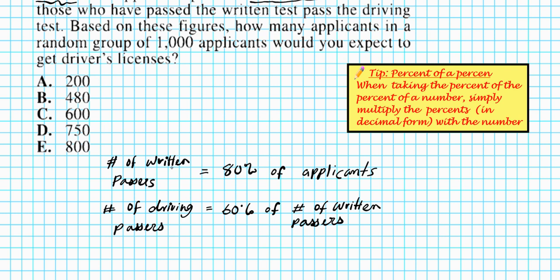So we can carry out the substitution of the first equation into the second one. So number of driving passers is equal to 60% of 80% of the applicants. Now, how can we write this in mathematical form?